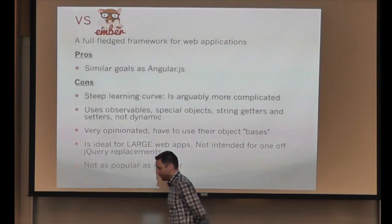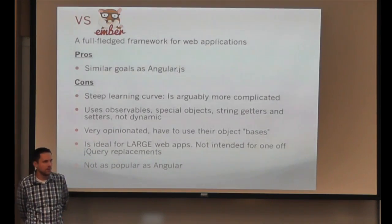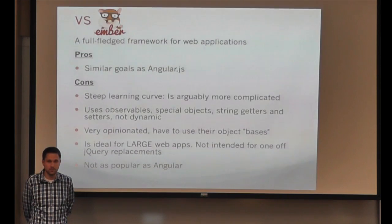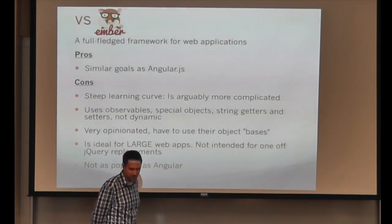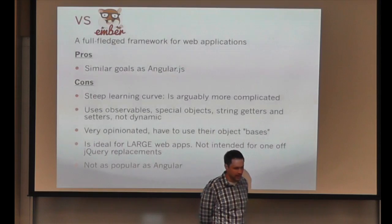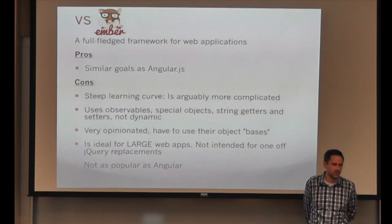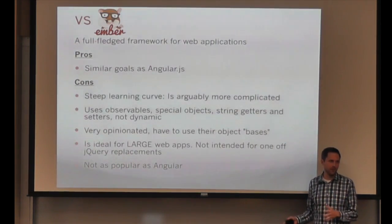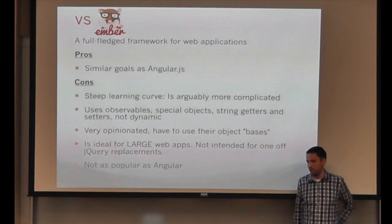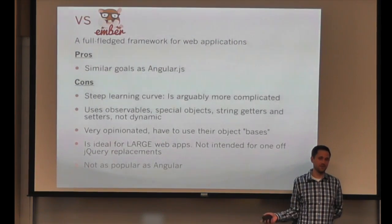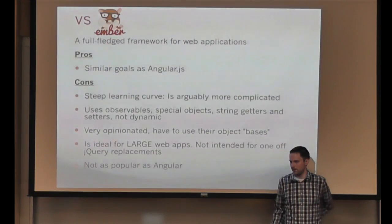Ember is very similar to Angular in goals. The cons I've encountered talking to people about Ember — and I've used it a little bit — is that there's a very steep learning curve. It also suffers from some of the same issues that Knockout does, where you have to use observables and special types, you have to use them the way they want you to, you can't use plain old JavaScript objects. And it's really intended to be used for large applications, so you can't scale between little and big like you can with Angular.